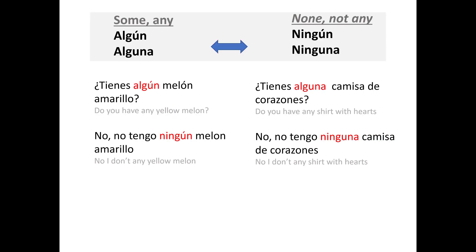Here's our last set — some or any versus none or nothing. In this slide I gave you the singular set. So if you're asking about something you can count, such as melon, apples, shirts, and so on, you're going to use these words. In the question, algún or alguna if you're asking about one item; in the answer, ningún or ninguna. For example: ¿tienes algún melón amarillo? — using algún because melón is masculine and singular. No, no tengo ningún melón amarillo.